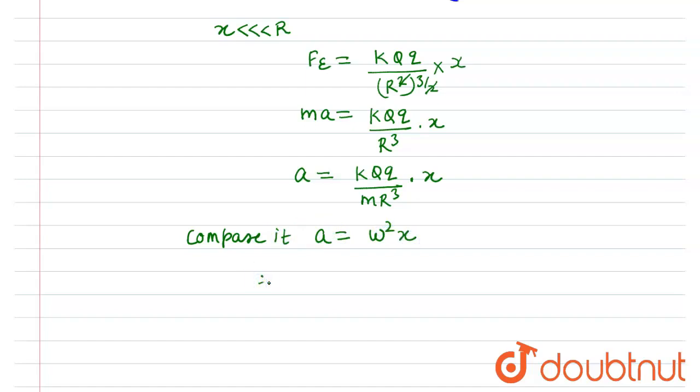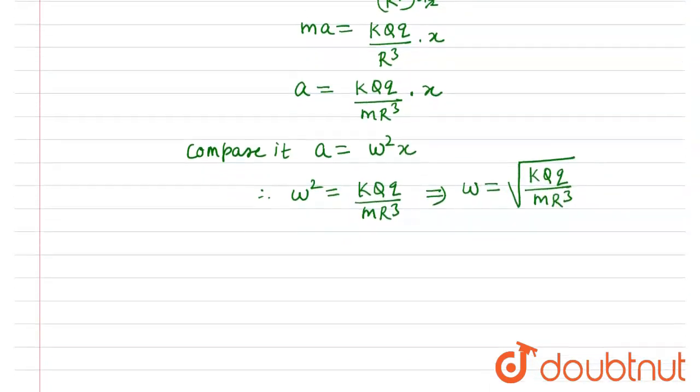So from here, ω² will be equal to kQq upon mR³. Therefore, ω will be equal to the square root of kQq upon mR³.